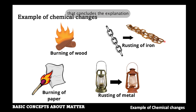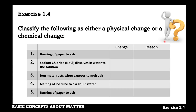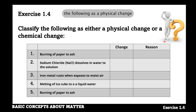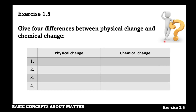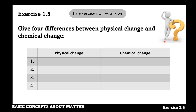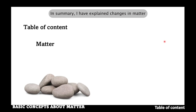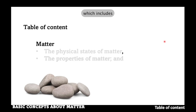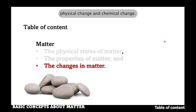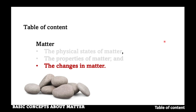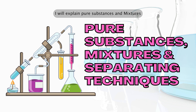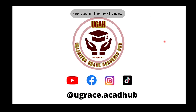That concludes the explanation of changes in matter. In the exercise, classify the following as a physical change or chemical change and give a reason for your answer. Also, note the differences between physical change and chemical change. After trying the exercise on your own, check the solution on the platform. In summary, I have explained changes in matter, including physical change and chemical change. This concludes the four sections on basic concepts about matter. In the next video, I will explain pure substances and mixtures. See you in the next video — bye for now.